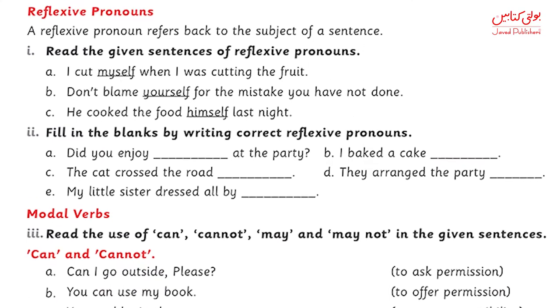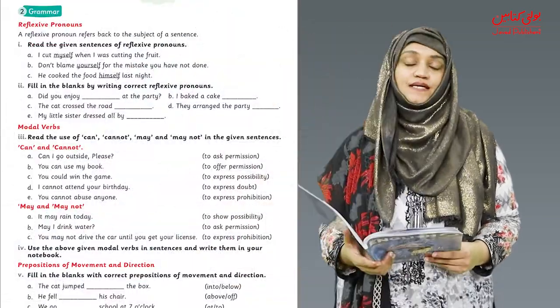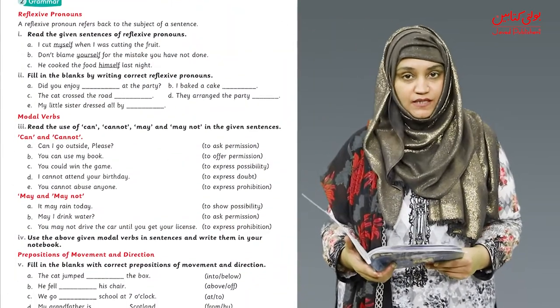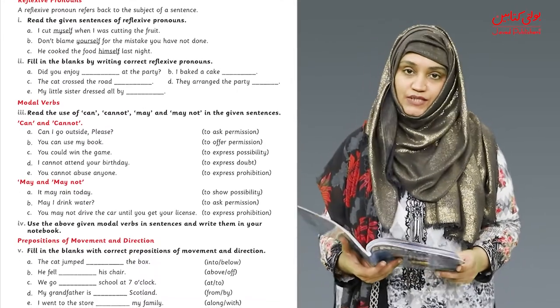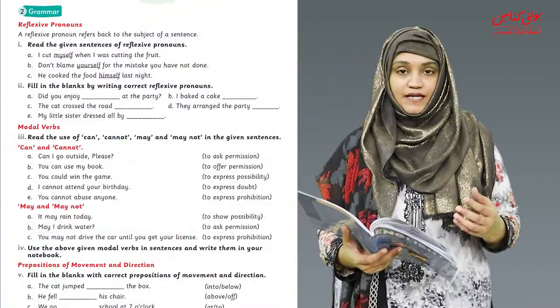We will be doing page number 50, section grammar, in which we will be learning about reflexive pronouns. Aap ko pata hai, pronouns are used in place of nouns. Jiske examples hai: he, she, it, we, us. Aur reflexive pronouns wo pronouns hote hai that talk about the subject of the sentence. Subject ka matlab hai noun.